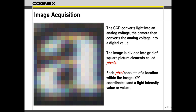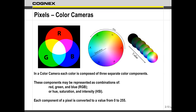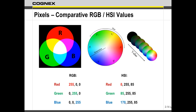Each pixel also has a location within the grid and a value. Since we're using a monochrome camera, our value is going to be 0 to 255 — that's 8-bit, giving us 256 levels of grayscale from black (0) to white (255). We also have color cameras. I'll go into color more in the advanced class, but briefly: we use a Bayer filter, and values can be represented as RGB (red, green, blue) or HSI (hue, saturation, intensity). We'll cover that in the color section.